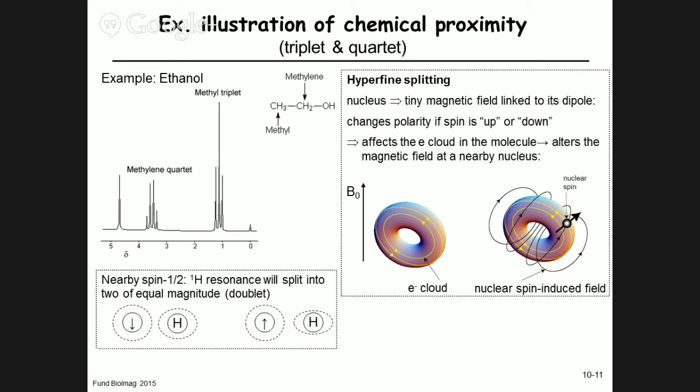A doublet — a resonance of two peaks with equal intensity — tells us there is one nearby hydrogen in chemical proximity. This is the fundamental basis of scalar coupling (J-coupling) in NMR.